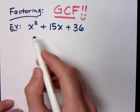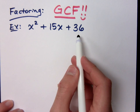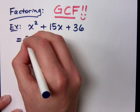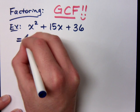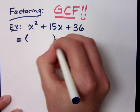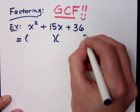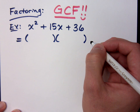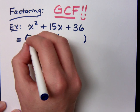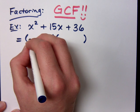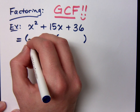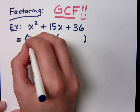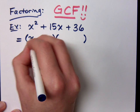Is there a common factor for everybody here? No. This is a trinomial. I expect it to factor as two binomial factors. Does it? Yes. How? X plus 12 and X plus 3.